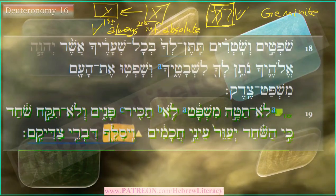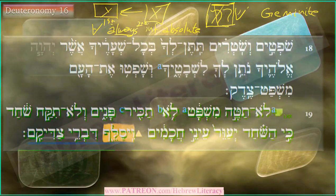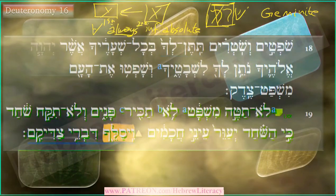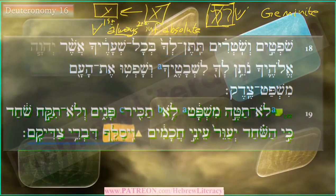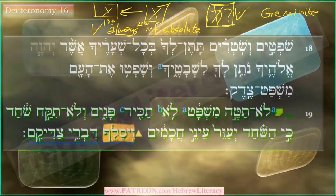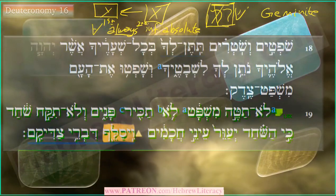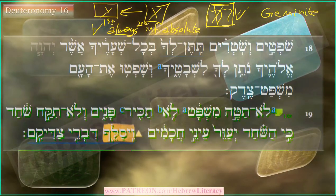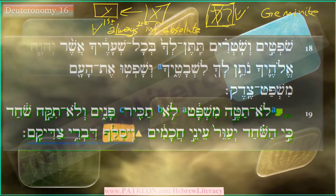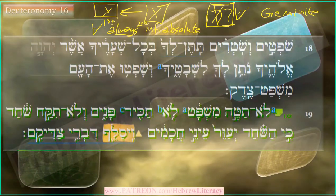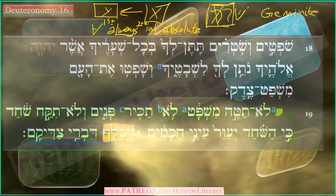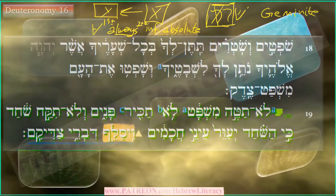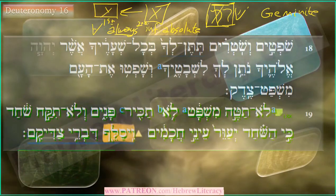'Tzedek tzedek tirdof' — 'justice justice you shall pursue' — is a very famous example. The repetition expresses emphasis. The sages sometimes break it out further: the first 'tzedek' applies to judges overseeing others, and the second 'tzedek' applies to each individual's responsibility to seek justice. Rashi will sometimes comment on an infinitive absolute by saying 'we have it twice here because it is all-encompassing for the world,' and so on.